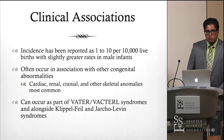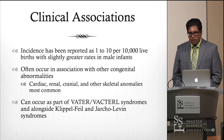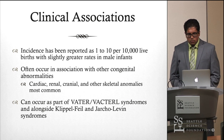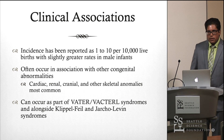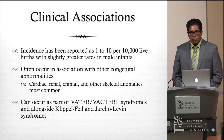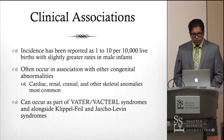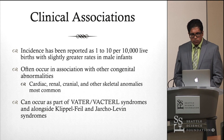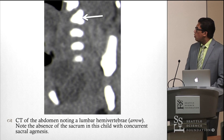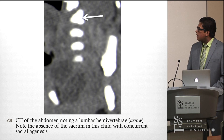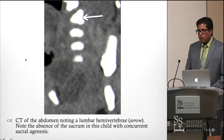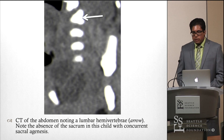The incidence of hemivertebra has been reported as 1 to 10 per every 10,000 live births, with some evidence of increased incidence in male infants, though other studies have denied this association. It is often found in association with other developmental disorders — most commonly cardiac, renal, cranial, and other skeletal anomalies. Hemivertebrae may also occur as part of more well-defined syndromes such as VACTERL, Klippel-Feil, and Jarcho-Levin syndromes. An additional image shows hemivertebra alongside sacral agenesis, illustrating that hemivertebra may not always be a standalone developmental anomaly.